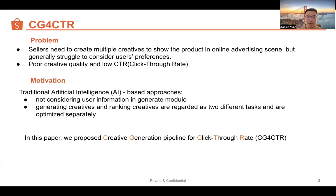To optimize the result, the generated creatives in the traditional method are then ranked by another module named the creative ranking model. The ranking model can predict the CTR score for each creative considering user features. However, the generating and the ranking of creatives are regarded as two different tasks.